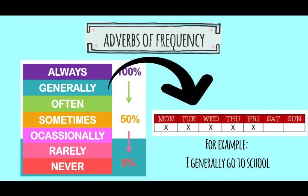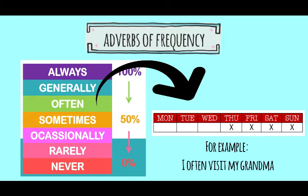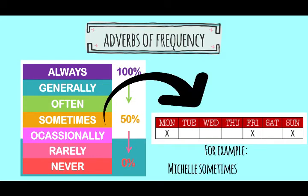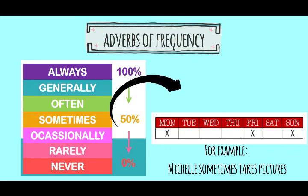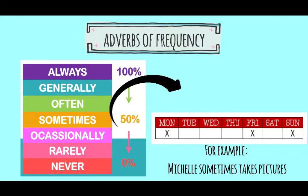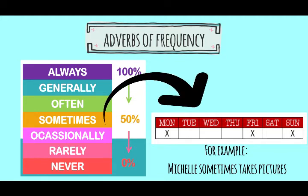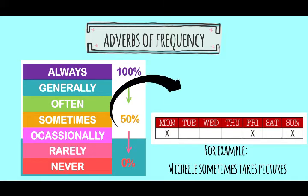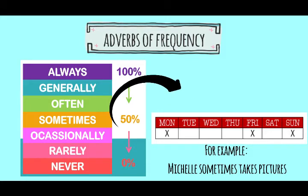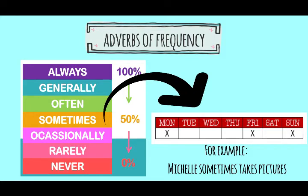Then let's see 'often' — a menudo — an activity we do about four times a week. For example: 'I often visit my grandma' — yo a menudo visito a mi abuela. Then 'sometimes' — a veces — an activity we do a few days. For example: 'Michelle sometimes takes pictures' — Michelle a veces toma fotografías, for example on Mondays, Fridays, and Sundays.